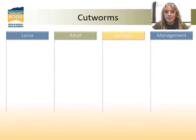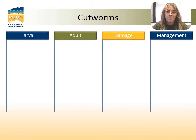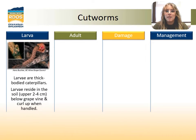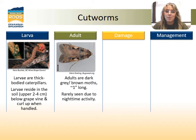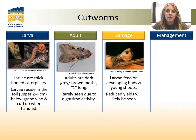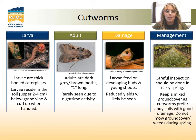Cutworms are another common pest in the Okanagan Similkameen and there are many different species that can affect your grapevine. The larvae do the most damage and are thick-bodied caterpillars that like to live in the top two to four centimeters of the soil. They are distinguishable by how they curl up when they're handled. Adults are dark gray or brown moths that are rarely ever seen as they are not active in daytime. Damage is mostly seen on developing buds and young shoots and it can affect your crop yield. To manage this, you can do frequent checks in the early spring when they're very active, keeping a diverse ground cover, as cutworms prefer sandy soils with good drainage, and withholding mowing and weeding in the spring.